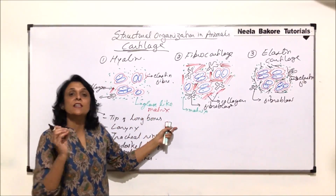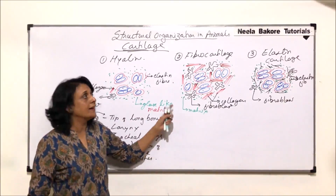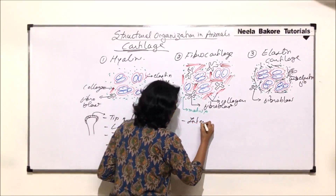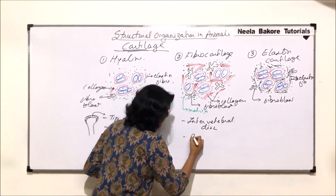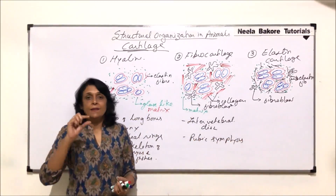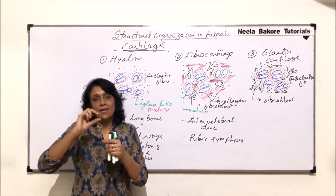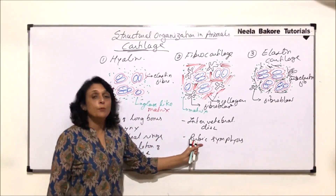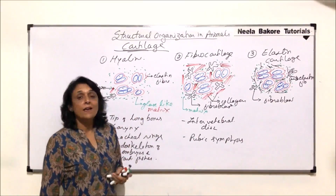Fibrocartilage, as the name tells us, is fibrous. It has high tensile strength and is very tough. Wherever there is shock absorption to be done, this cartilage is present. The locations of fibrocartilage are mainly two: intervertebral discs and pubic symphysis. Between the vertebrae there is a disc-like padding that absorbs stress when we stand. Pubic symphysis is in the pelvic girdle where the two pubic bones join. These are the two places where we find fibrocartilage.